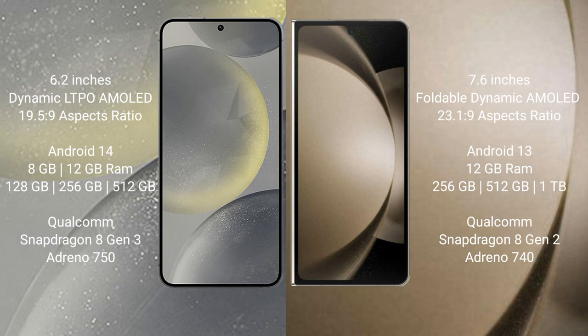Samsung S24 comes with 12GB RAM and 128GB, 256GB, 512GB internal storage, Qualcomm Snapdragon 8 Gen 3 processor and GPU Adreno 750.